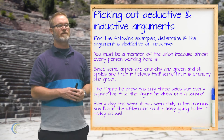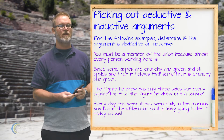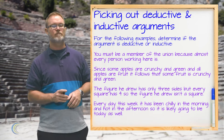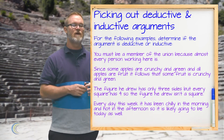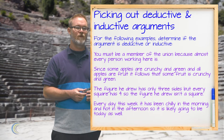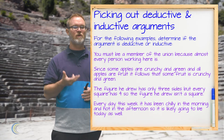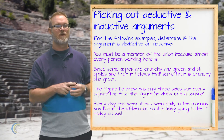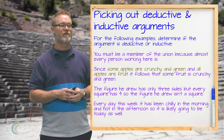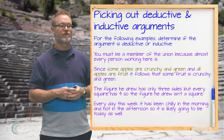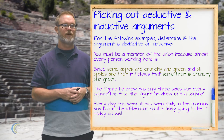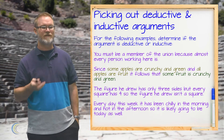Next: since some apples are crunchy and green and all apples are fruit, it follows that some fruit is crunchy and green. This is a deductive argument because the conclusion is the only possible claim that could follow from those premises. Given that some apples are crunchy and green, and all apples are fruit, it necessarily follows that some fruit is crunchy and green — namely the apples.